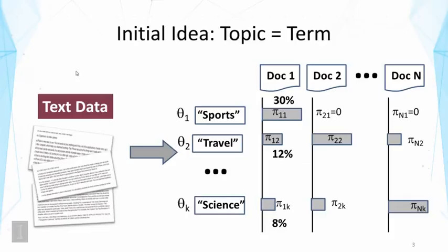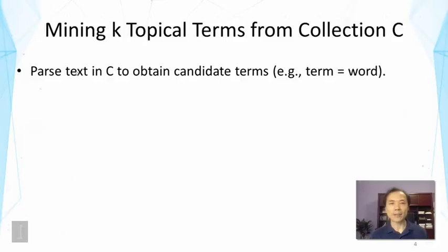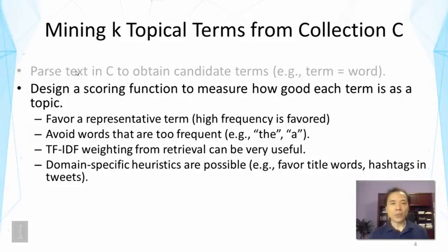As we discussed in the task definition for topic mining and analysis, we have two tasks. One is to discover the topics, and the second is to analyze the coverage. So let's first think about how we can discover topics if we represent each topic by a term — that means we need to mine k topical terms from a collection. There are many different ways of doing that, and we're going to talk about a natural way that is also likely effective. First, we parse the text data in the collection to obtain candidate terms, which can be words or phrases. The simplest solution is to take each word as a term, and these words become candidate topics. Then we design a scoring function to measure how good each term is as a topic.